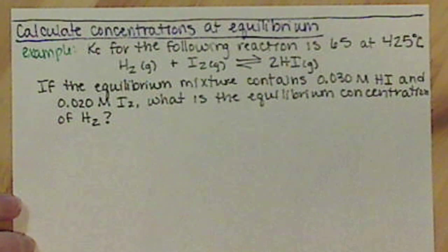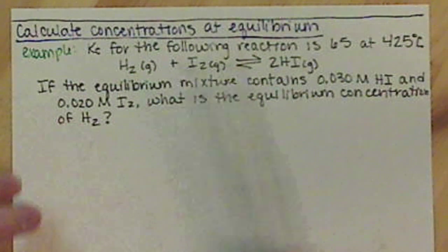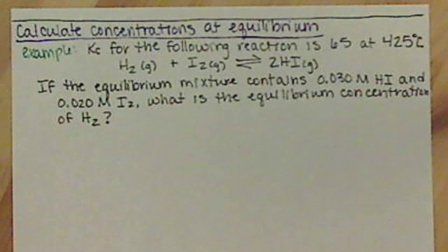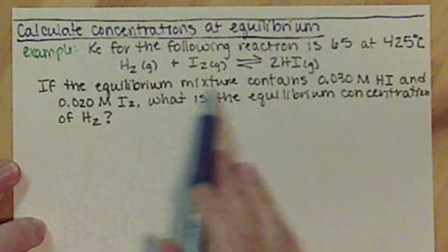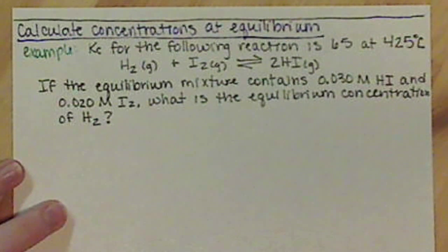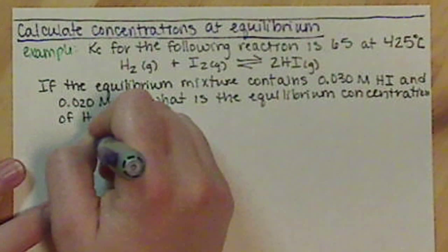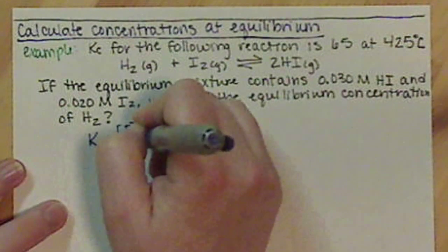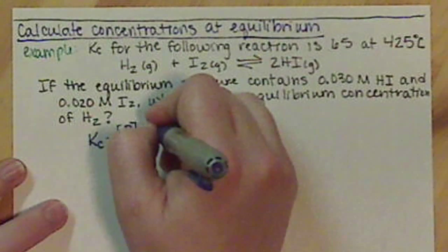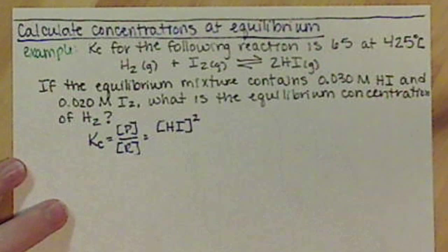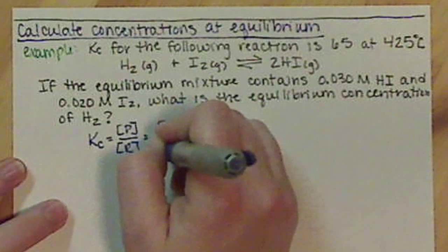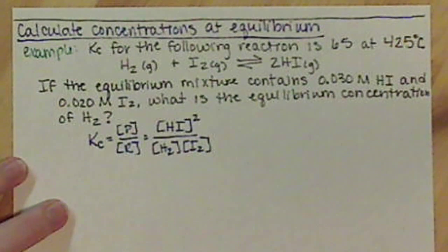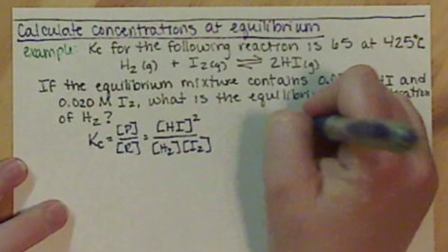This temperature portion for us is just extra information. The equilibrium constant, this value, is dependent on that temperature. But we're not going to be changing temperatures for this class. So anytime you see a temperature, you can go ahead and just ignore it. So what we want to do first is we're going to have to write out an equilibrium constant expression. So we need our Kc expression. We have our products over our reactants. So we have our product of hydrogen iodide, and it has a coefficient of 2, so that's raised to the 2 power. And we're going to divide that by our concentration of hydrogen and iodine.